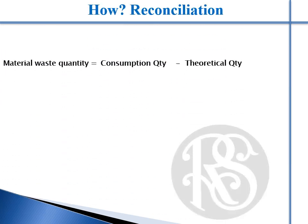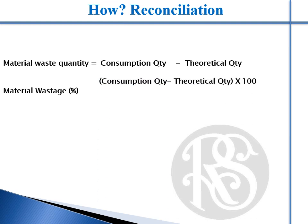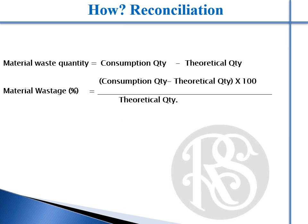How is the reconciliation done? Material waste quantity = consumption quantity minus theoretical quantity. Material waste percentage is calculated as: (consumption quantity minus theoretical quantity) × 100, divided by theoretical quantity.